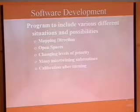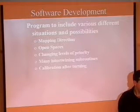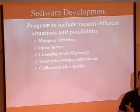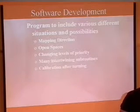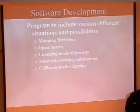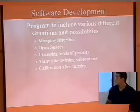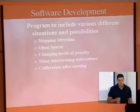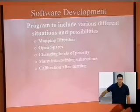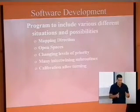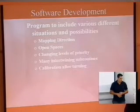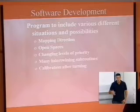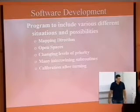Now I'm going to hand it over to Nick, who's going to speak about software development. Okay, really briefly — the software was too intertwining and complex to put in a flow chart. But basically what it does is it maps the room from the right-hand side and works all the way around, using forward as its main direction. It always aims forward, avoids open spaces, and tries to stay along the perimeter of a wall.